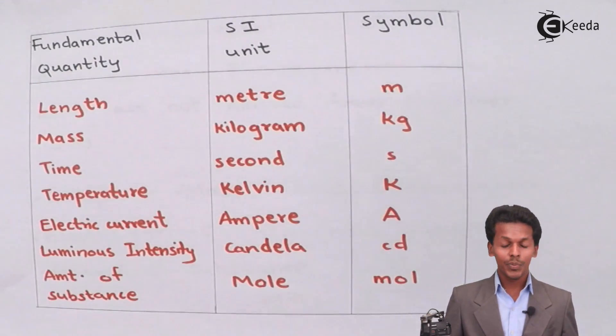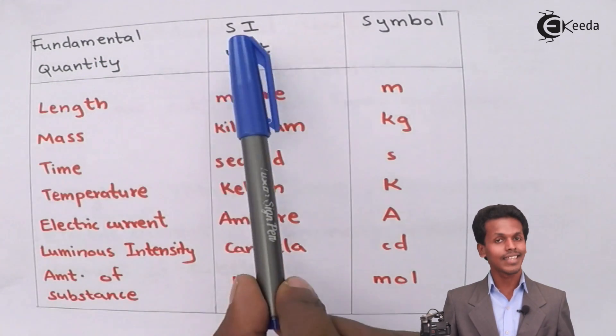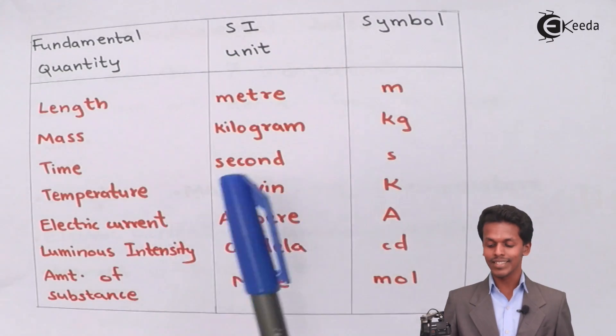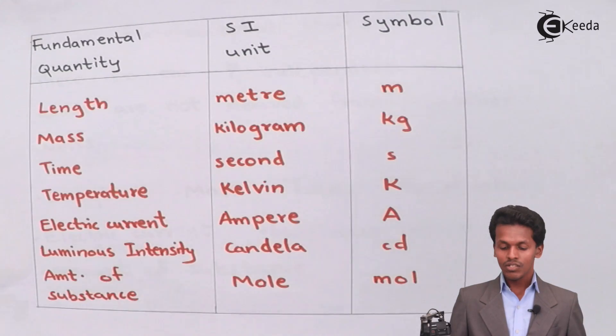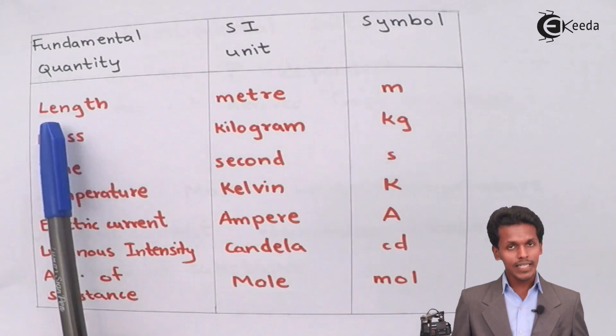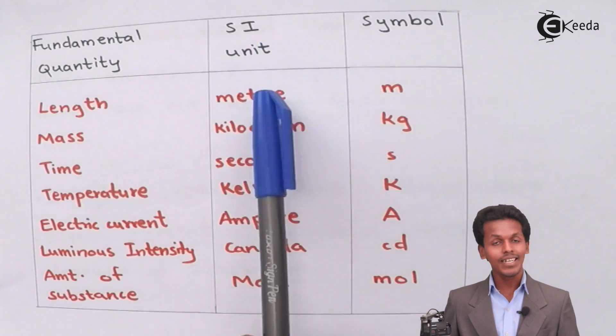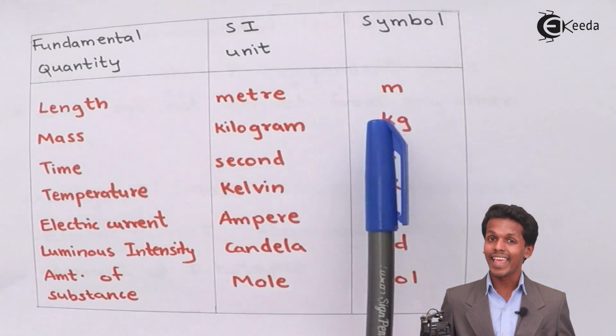I have distributed this as fundamental quantities, the seven fundamental quantities. This is the SI unit and this is the symbol of that particular fundamental quantity. Talking about the length, the length SI unit is in meter and the symbol is small m.